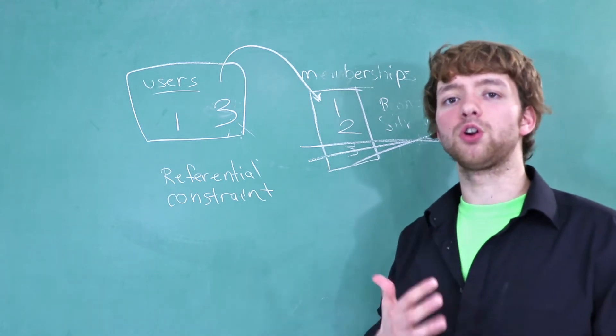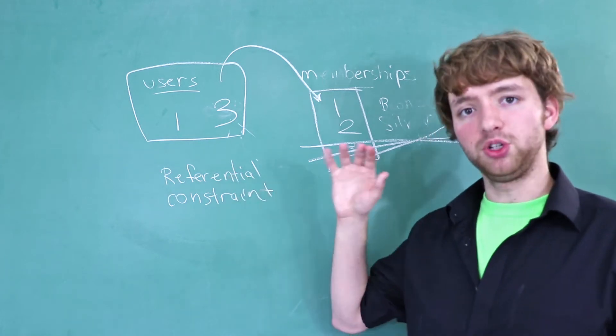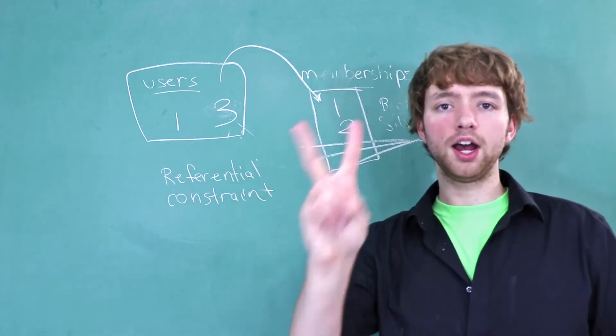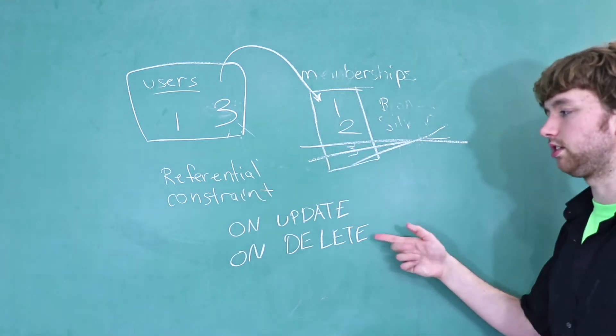So when you make a foreign key, there are some default rules that are applied to your references. But you can configure those. Specifically, there's two kinds of referential constraints. There's on update constraints and on delete constraints.